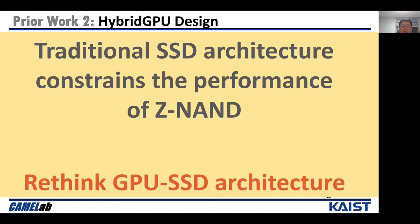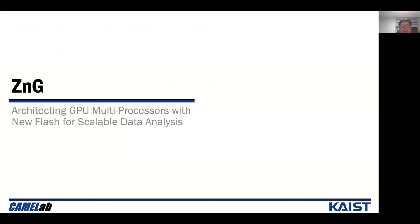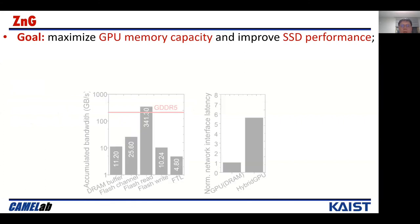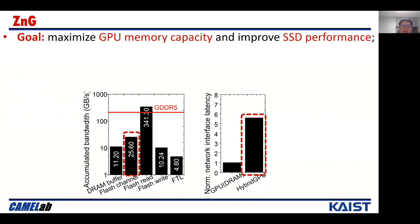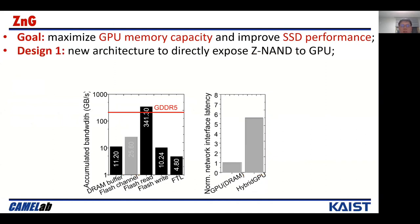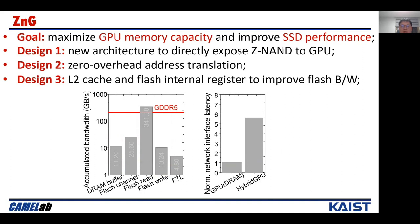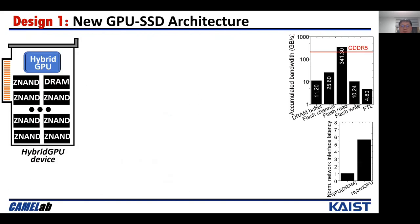To narrow the performance disparity between GPU and SSD, we need to rethink the GPU SSD architecture. So we propose ZNG, a new GPU SSD architecture. ZNG maximizes GPU memory capacity by fully replacing GPU internal DRAM with ZNAND packages and significantly improves SSD performance. Considering the flash channel and network interface constrain ZNAND performance, we designed an architecture to directly expose ZNAND to the GPU. The poor FTL performance is due to limited computation power of the SSD controller, so we automate FTL functions in existing GPU hardware to achieve zero overhead address translation. Since the DRAM buffer performs worse than ZNAND, we removed it and instead leveraged the high-performance L2 cache and flash internal registers as buffers.